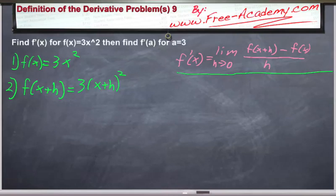Now let's solve that algebraically to get 3 times (x² + 2xh + h²). And then distribute through our 3 and we get 3x² + 6xh + 3h².